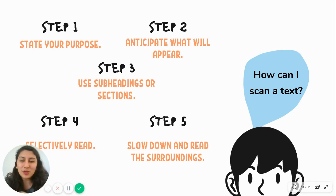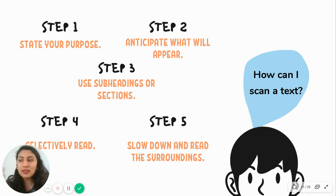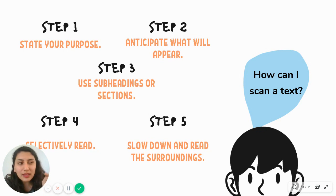Step number four: selectively read. As we were saying, you don't need to read every single word. You can skip some parts, but you need to selectively read. You're looking for specific information, so you read selectively — you can skip parts you know you won't need because they're not related to your purpose. Step number five: when you know where the information is, you can slow down a little bit. Stop at the place in the text where you find the keyword related to what you're looking for.